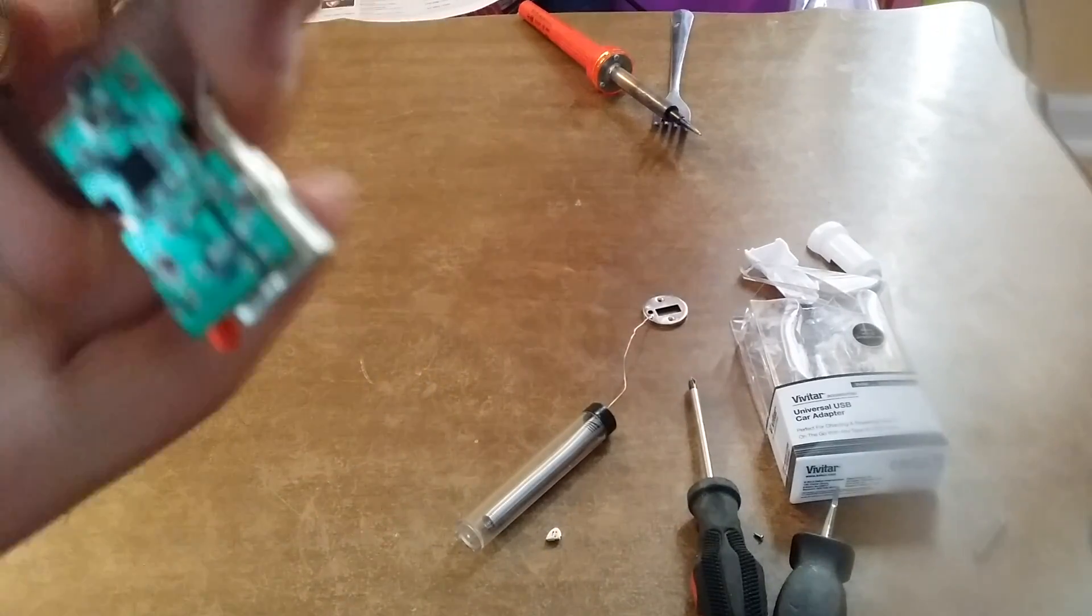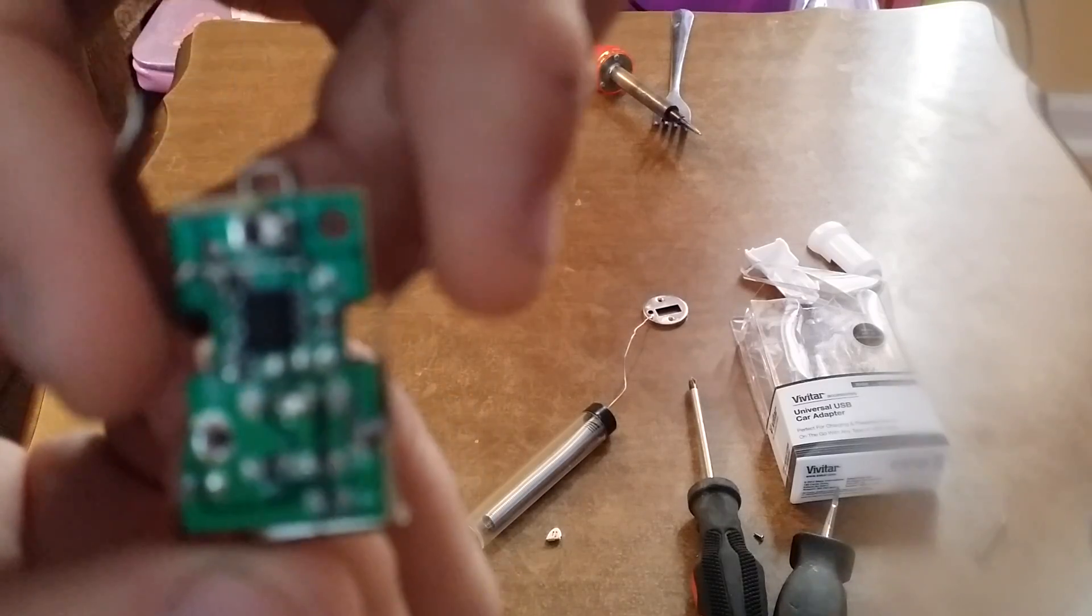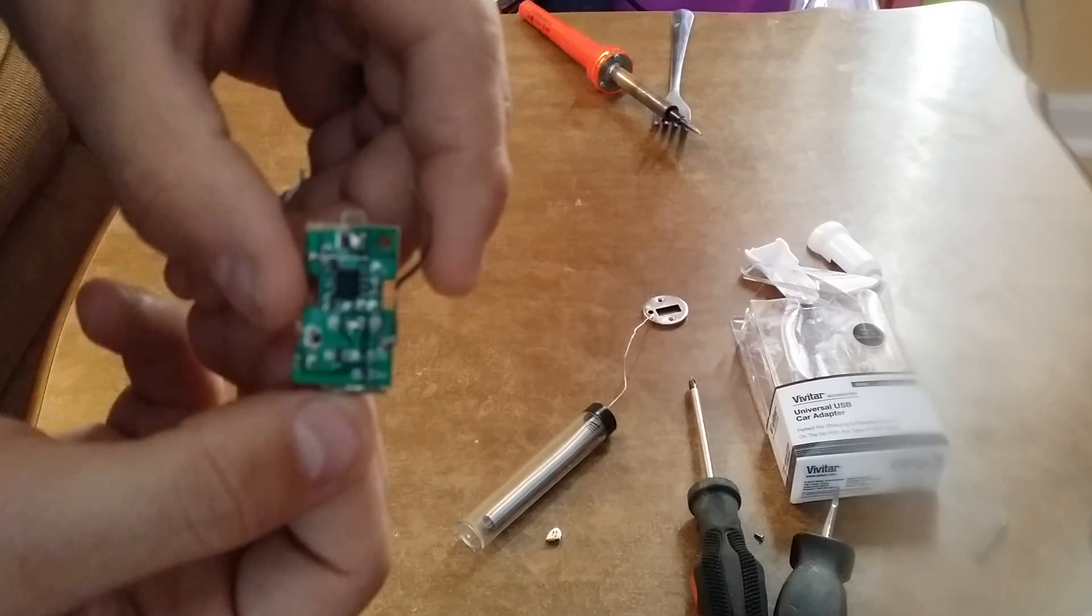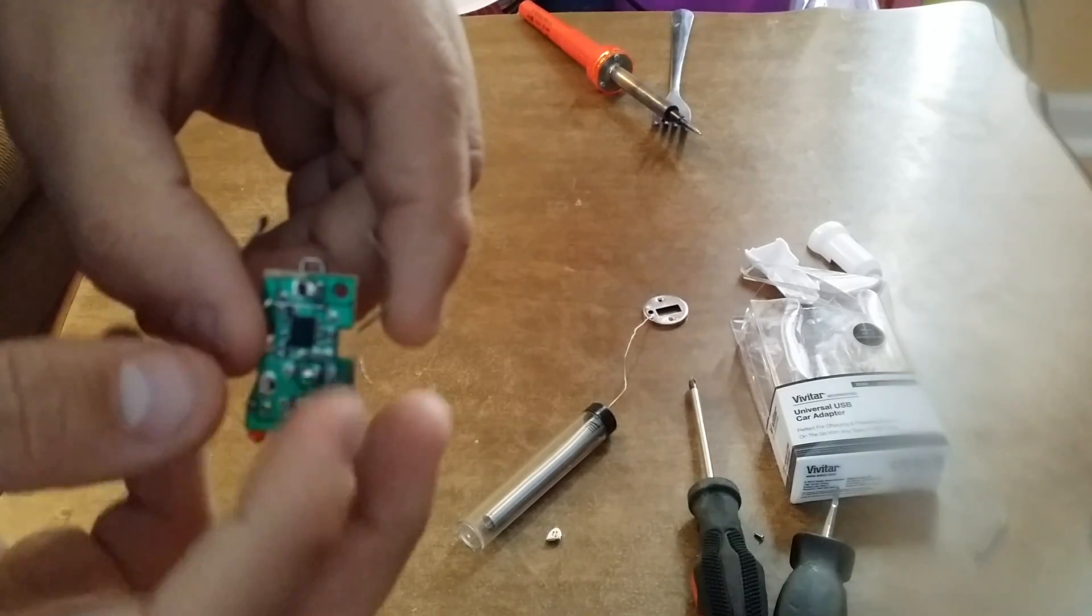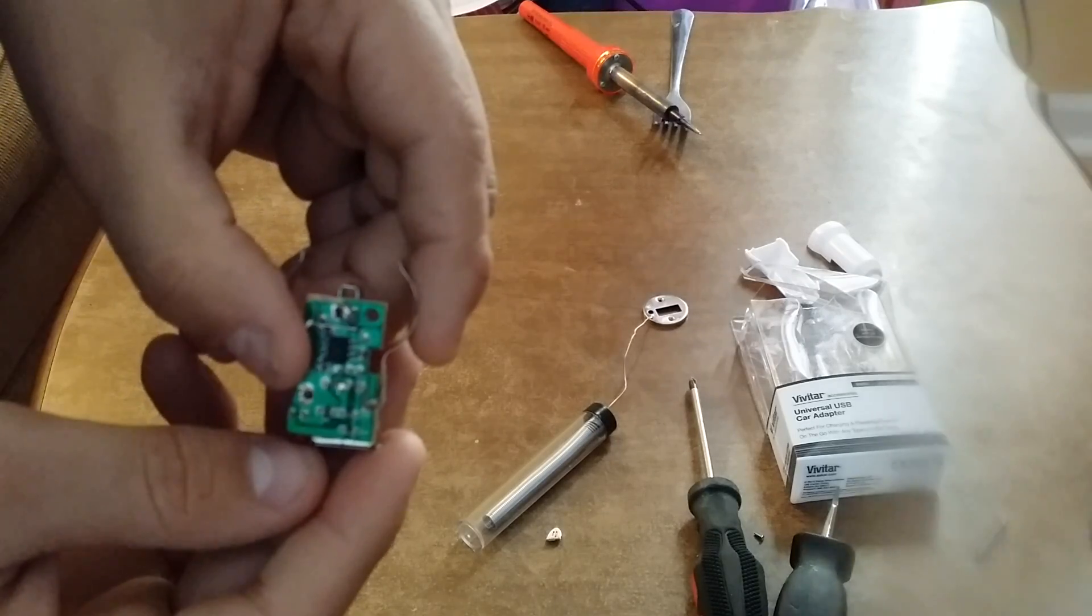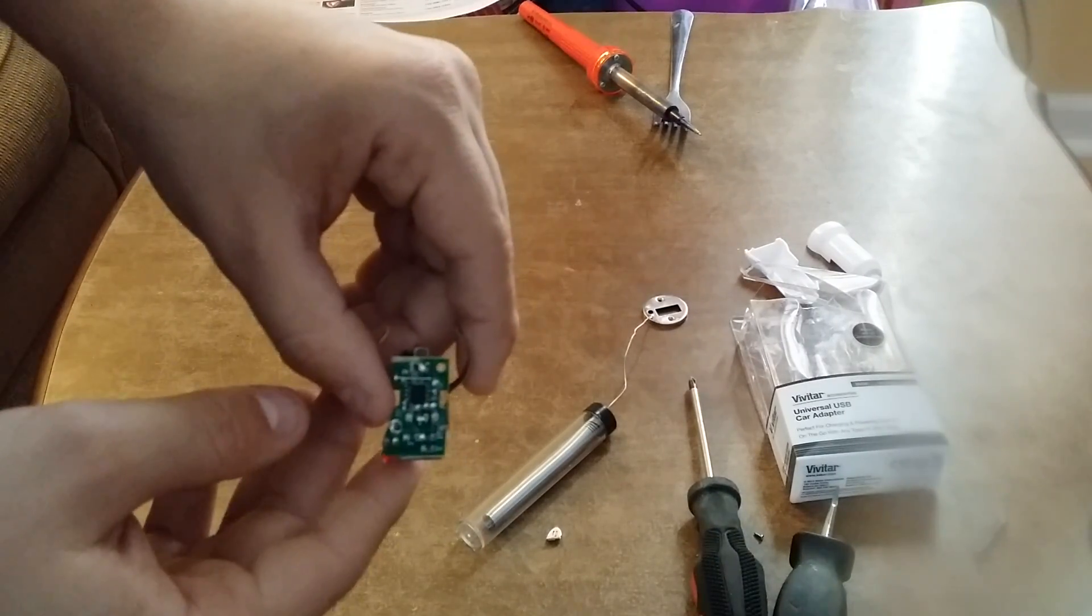Now you can look - got a nice clean solder there. Let's see if you can see that. If you can see that big blob right there, we soldered the two middle pins together. That's all we did. Took a nice piece of solder and soldered it right together.